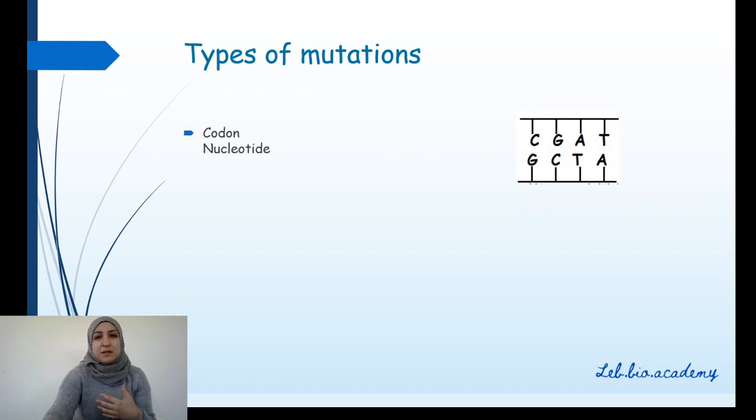First of all, what is the meaning of codon and what is the meaning of nucleotide? Nucleotide is this small unit that makes your DNA and it's made from a phosphoric acid, a deoxyribose sugar, and a nitrogenous base. In this lesson, we will focus on the nitrogenous base only. So we're going to consider this is a nucleotide, this is another nucleotide. Each unit is a nucleotide. However, the codon is made up of three nucleotides. So CGA is called a codon. Codon is a group of three nucleotides.